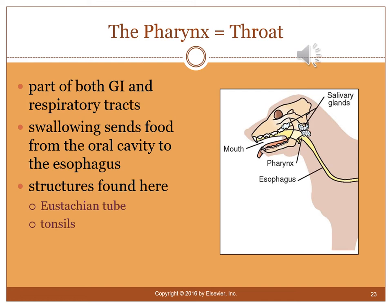The pharynx, or throat, is part of both the GI and respiratory tracts. It is responsible for swallowing and sending food from the oral cavity to the esophagus, and the epiglottis prevents food from entering the trachea. Structures in the pharynx also include the Eustachian tubes, which drain from the ear, and the tonsils.